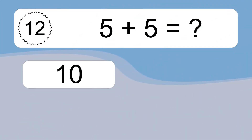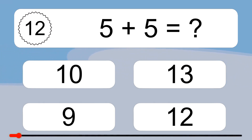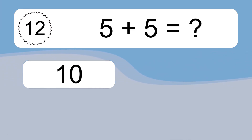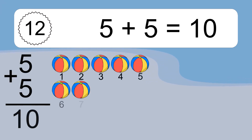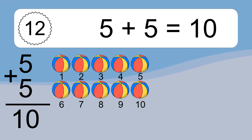5 plus 5 equals 10. Let's count it. 1, 2, 3, 4, 5, 6, 7, 8, 9, 10.